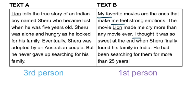As you can see, authors use third-person when they want to describe facts or information about a subject, and first-person when they want to explain a little more about how they feel or what they think.